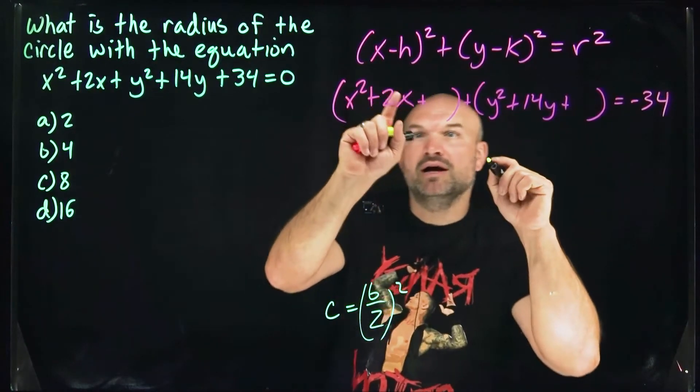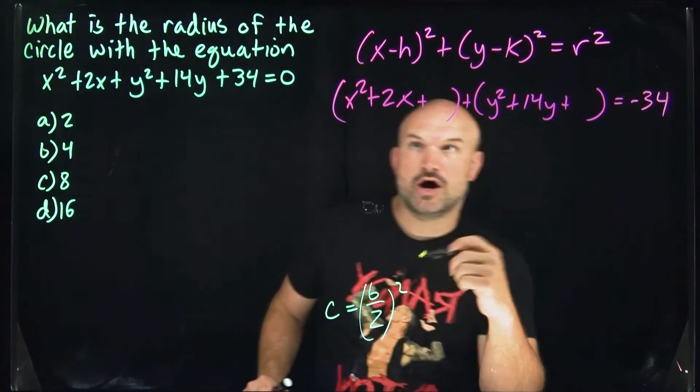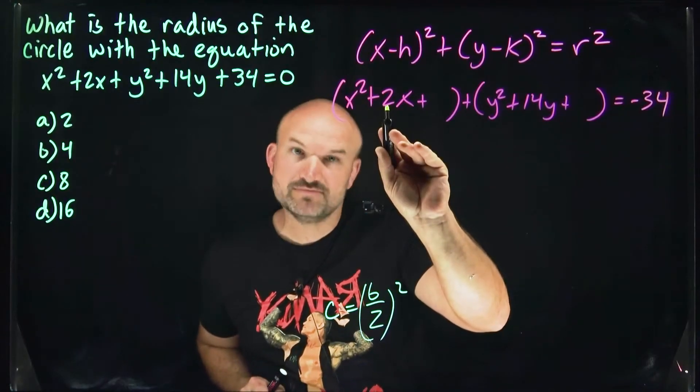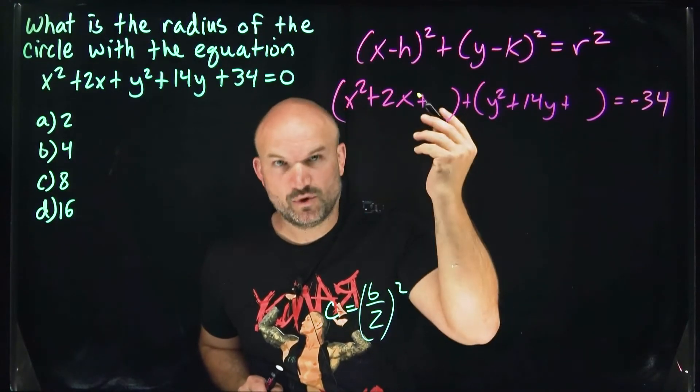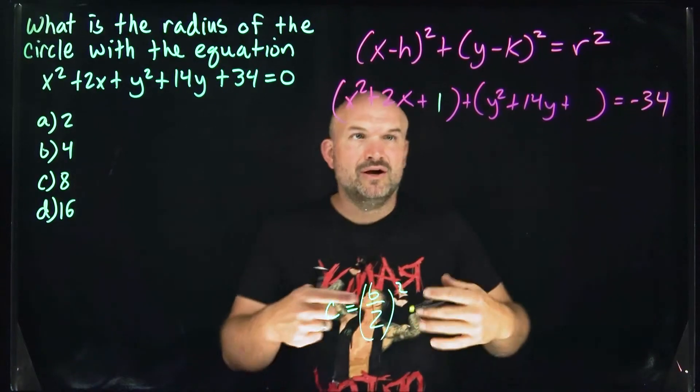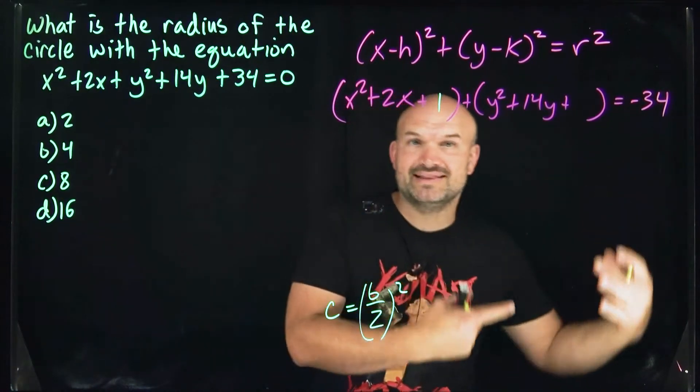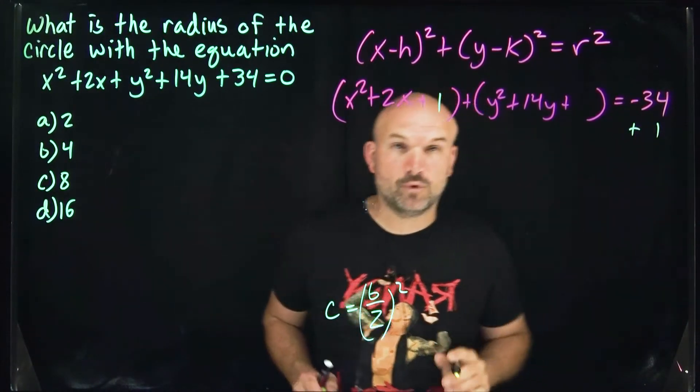We need to do this for our x's and y's. Take the middle term 2 divided by 2, which is 1. 1 squared is 1. But remember, whatever we do on one side, we must do on the other side. So I'll add a 1 here.